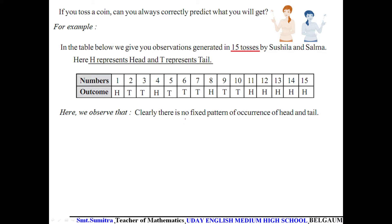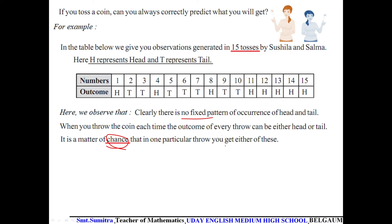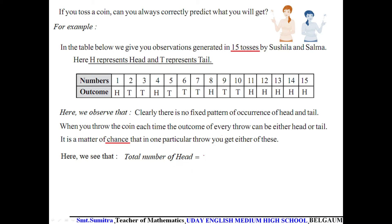There is no fixed pattern of occurrence of head and tail. When we throw a coin, each time the outcome can be either head or tail — it's a matter of chance. Counting the heads in the 15 outcomes, we get 1, 2, 3, 4, 5, 6, 7, 8 — so the total number of heads is 8.